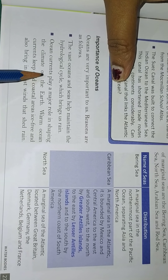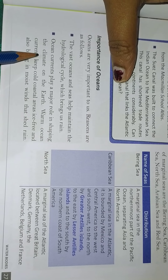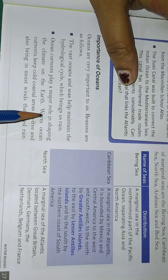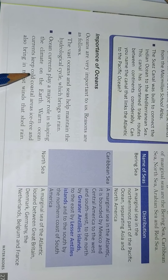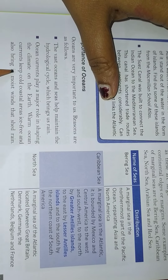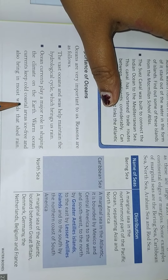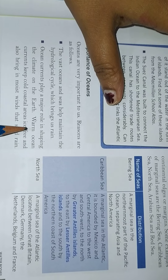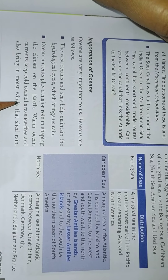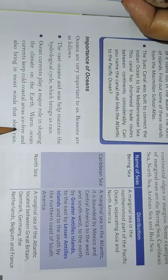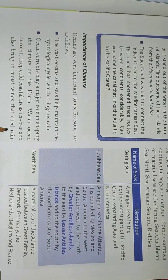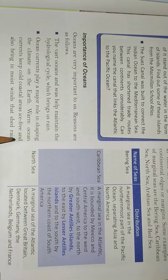Ocean currents play a major role in shaping the climate on the earth. Warm ocean currents keep cool coastal areas ice-free and bring moist winds that cause rain.